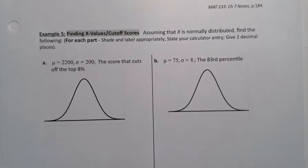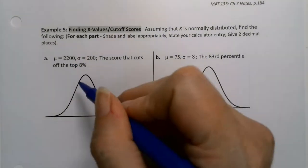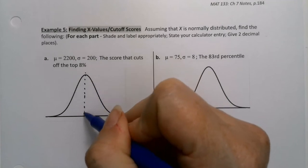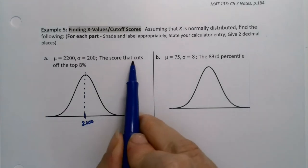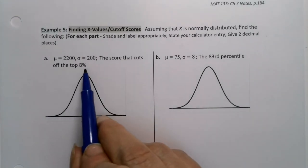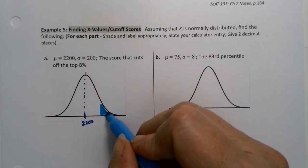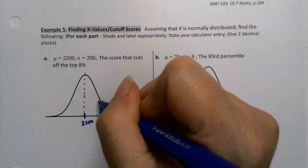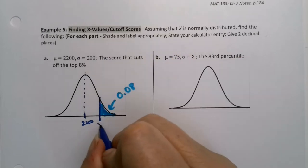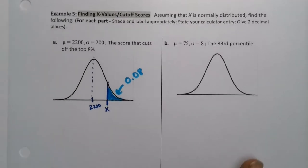All right. So let's look at this first problem. I use the same means and standard deviations as the previous problem just for fun. So we know that the mean right here is 2,200. I want the score that cuts off the top 8%. Well, top 8% would be over here on the right. So I would shade an area of the tail that's 8%.